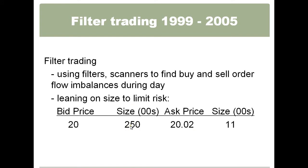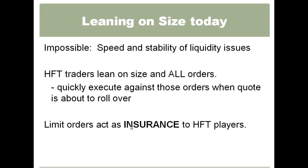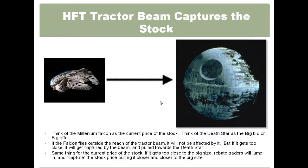You're trying to lean on a 25,000-share bid and what happens is it transacts out in a millisecond. Then you're sitting there, and other people were leaning on it too — and now there's going to be a race to get out of this stock and it can get really ugly. High-frequency traders like to lean on the size and they use this as insurance.